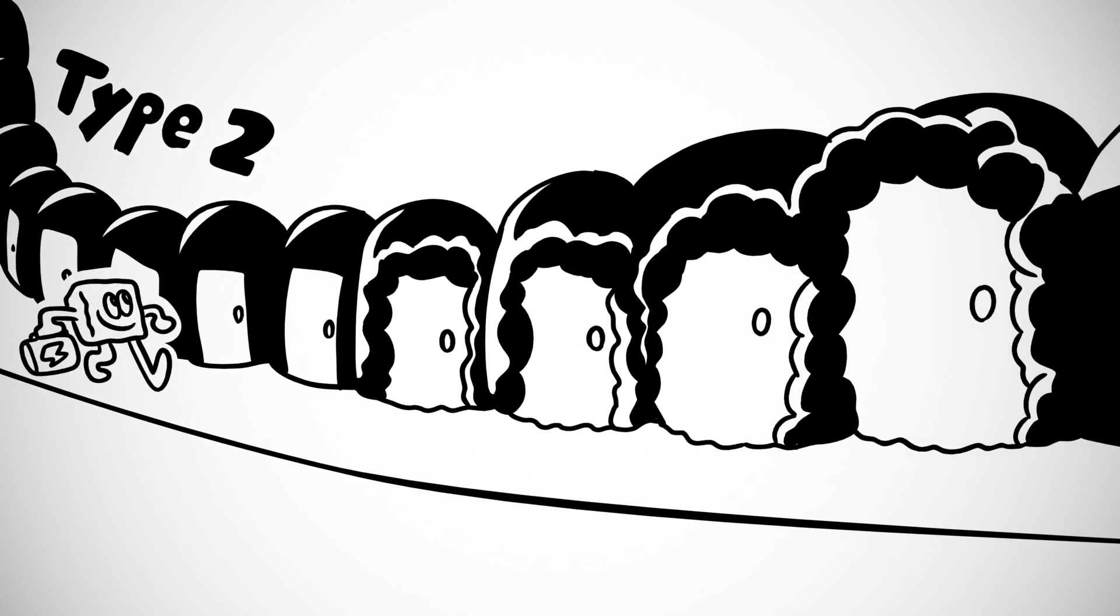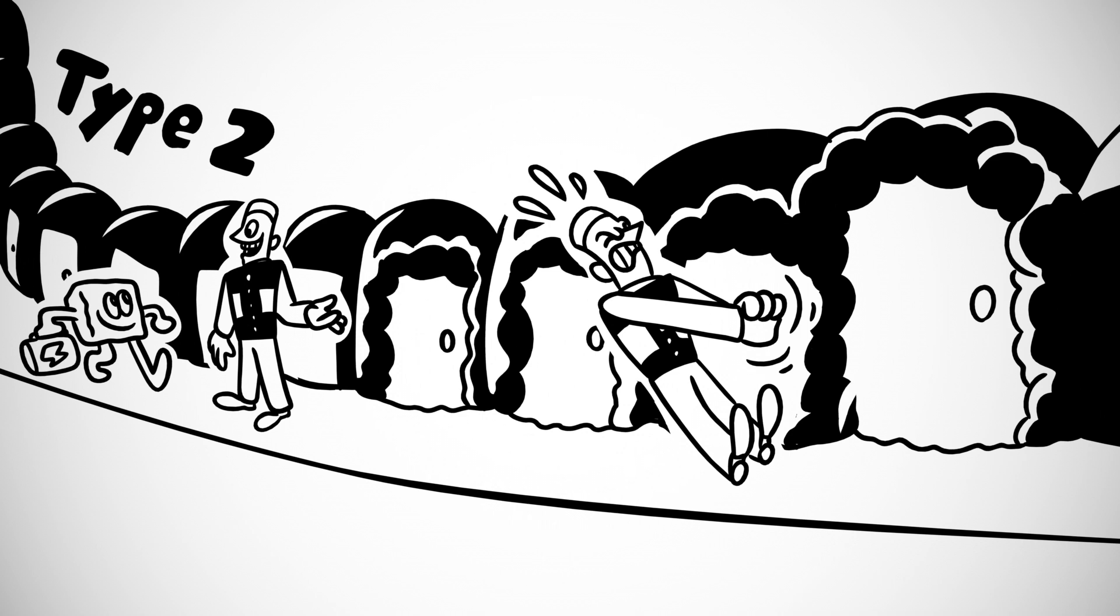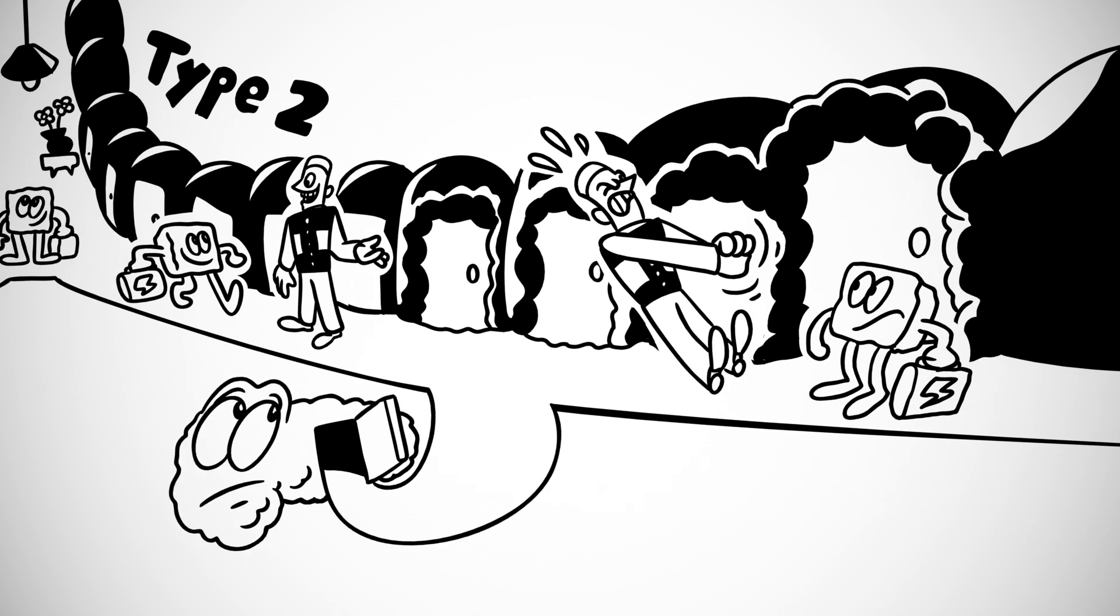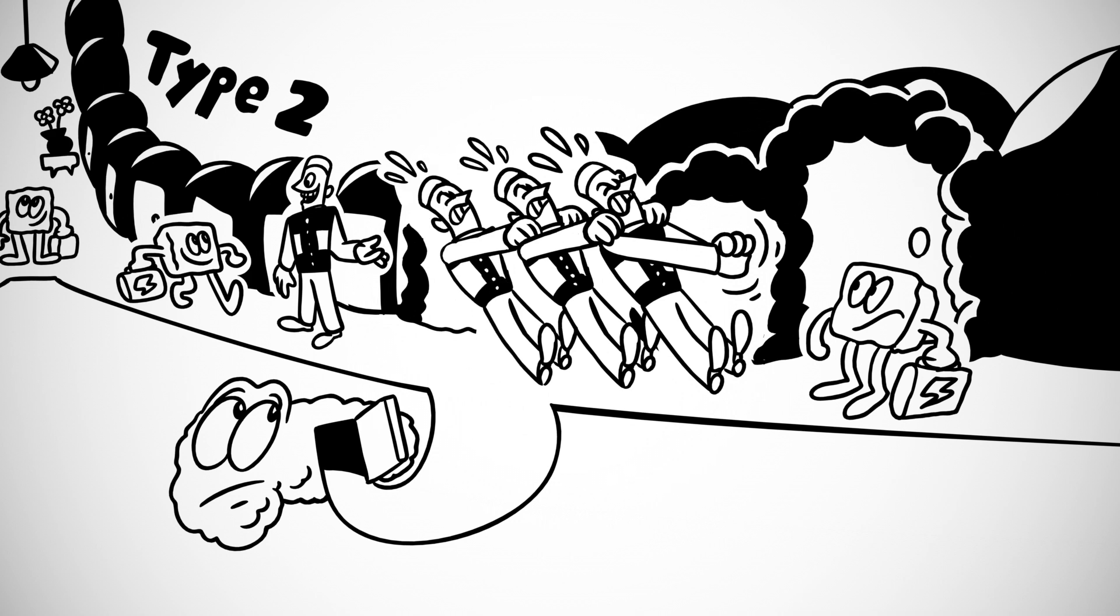In type 2 diabetes, the doors become stuck. Insulin can still unlock the doors, but it has a much harder time opening them, so less glucose can get into the cells. The pancreas tries to make more insulin to help open the doors, but over time it's able to produce less and less.